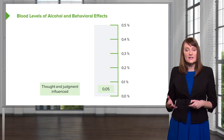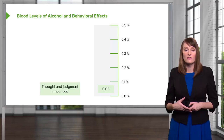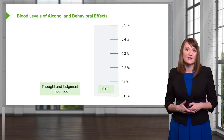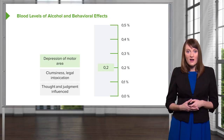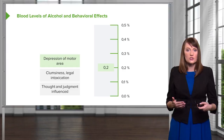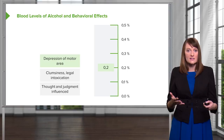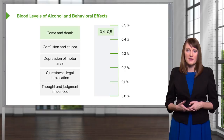Blood levels of alcohol can really impact our physiological state. At about 0.05%, someone will have a little bit of thought and judgment impairment. As use increases, they become clumsy and start reaching the legal limit of intoxication. At 0.2%, there is depression of motor function — their gait becomes wobbly, they can't walk in a straight line or handle fine motor tasks normally. At even higher levels, they become confused and stuporous, and eventually very high amounts can lead to coma and even death.